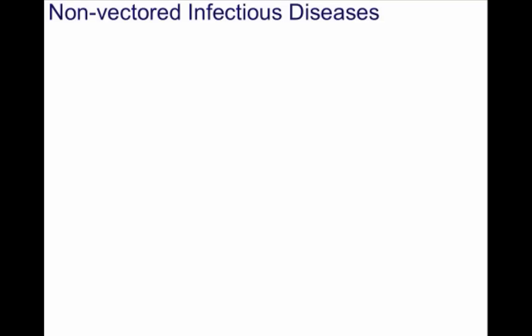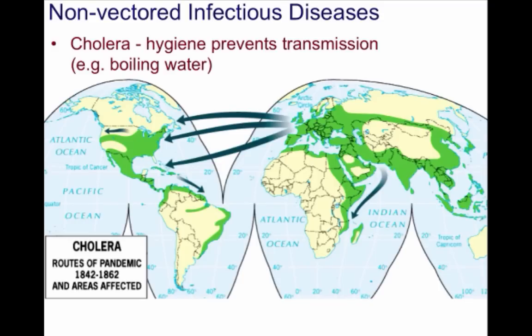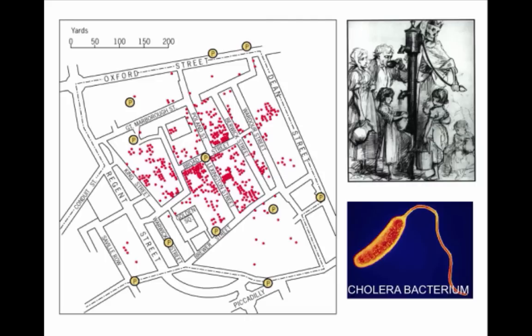Cholera is an ancient disease that was confined to India until the beginning of the 19th century, where it spread to China, Japan, East Africa, and Mediterranean Europe. Death was horribly convulsive and came in a matter of days. When a pandemic reached England in the 1850s, cholera swept through the Soho District of London. Dr. Snow mapped the Soho District, marking water pumps with a P and marking each cholera death with a dot. He noticed a large cluster of deaths around the pump on Broad Street. City authorities removed the handle from that pump, and almost immediately, new cases fell to nearly zero, confirming Snow's theory about water's role in spreading cholera.